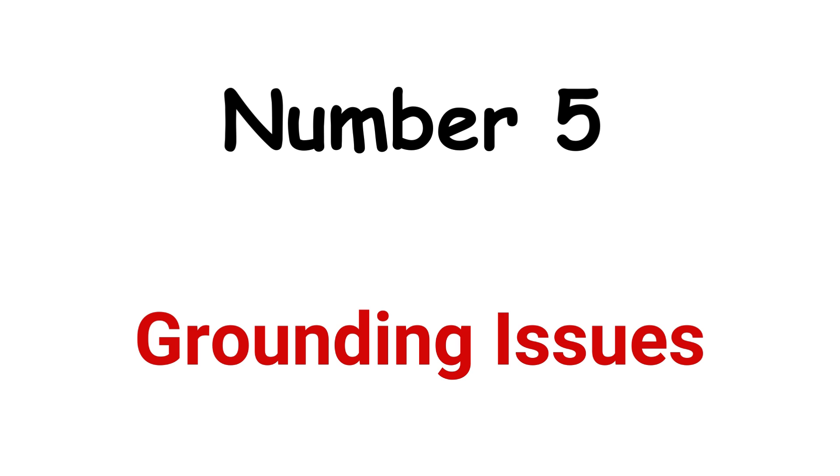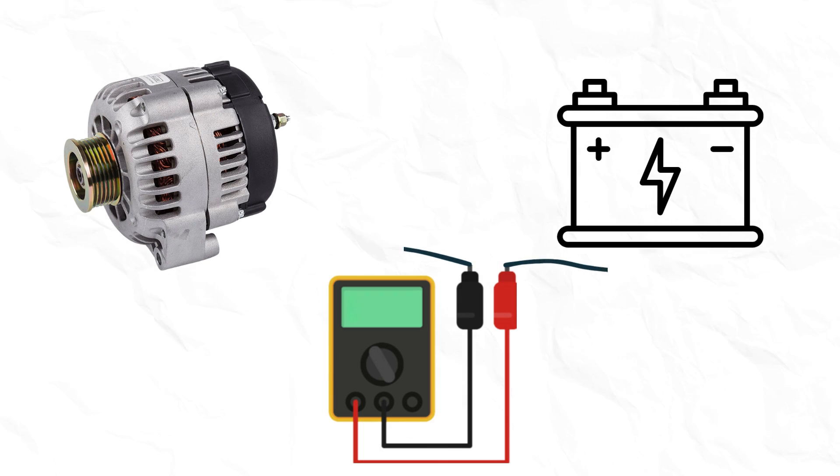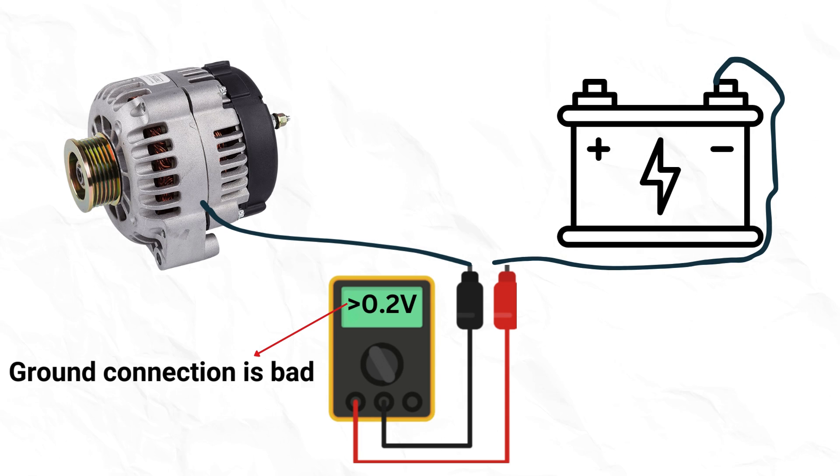Number 5: Grounding issues within the electrical system itself. Corroded or loose grounds can cause voltage drop which may turn on the battery warning light. Connect one probe of multimeter to casing of the alternator and other probe to negative terminal of battery. If voltage drop is more than 0.2 volts, it means ground connection is bad.